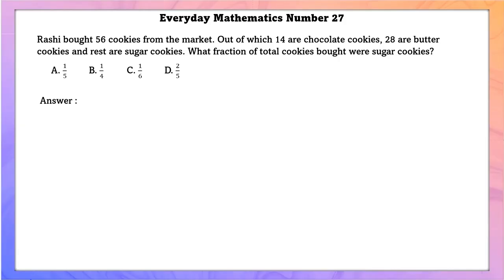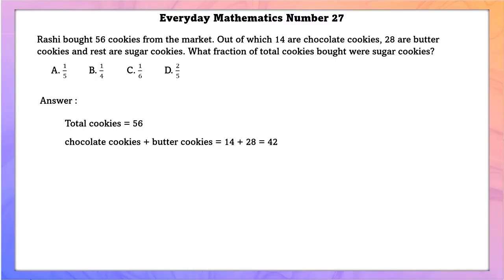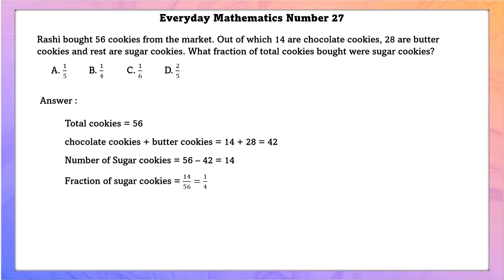Everyday Mathematics question number 27. Rashi bought 56 cookies: 14 chocolate and 28 butter, so sugar cookies = 56 − 42 = 14. The fraction of sugar cookies is 14/56, which simplifies to 1/4.